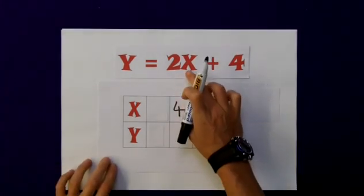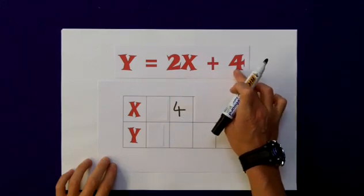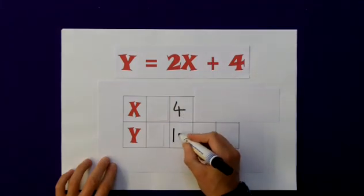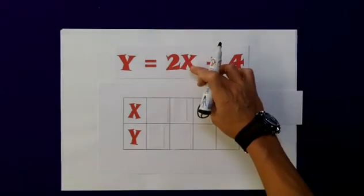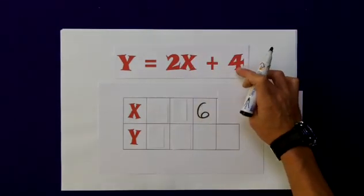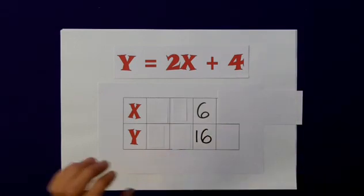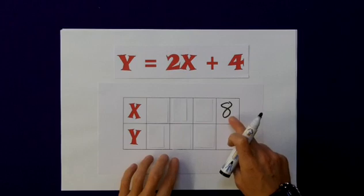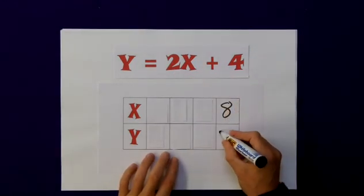Now if we put 4 into this equation, 2 times 4 is 8, plus 4 is 12. Now with the 6, 2 times 6 is 12, plus 4 is 16. Finally the 8, 2 times 8 is 16, plus 4 gives me 20.